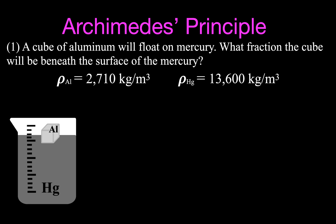We are going to use Archimedes' principle, and we need the densities of these two objects. Aluminum has a density of 2,710 kilograms per cubic meter, and mercury has a density of 13,600 kilograms per cubic meter. The aluminum cube has a weight pointing straight down — that is Fg, the weight of the object. The reason it does not sink is because there is a buoyant force pointing straight up, so the buoyant force equals the weight force.